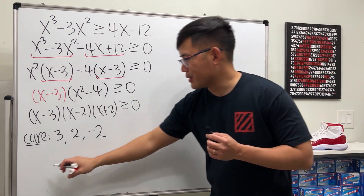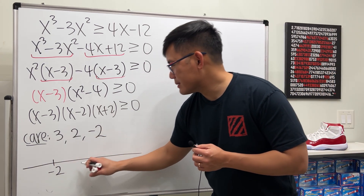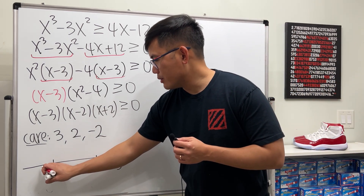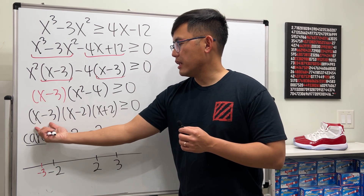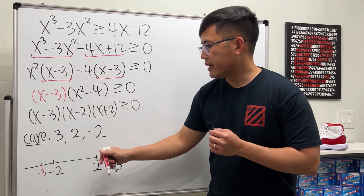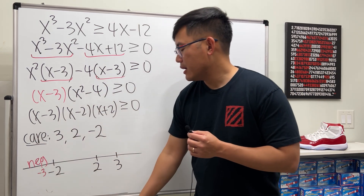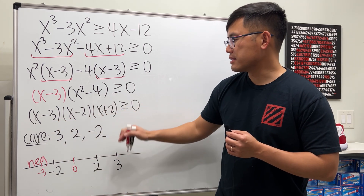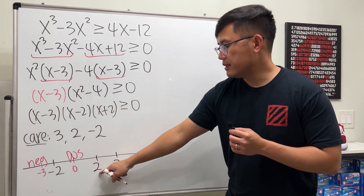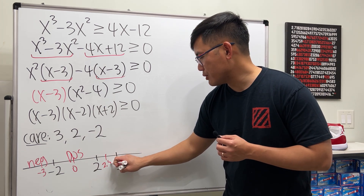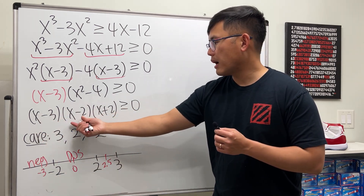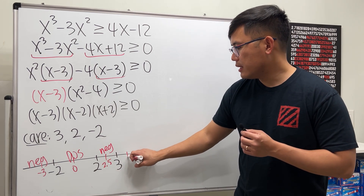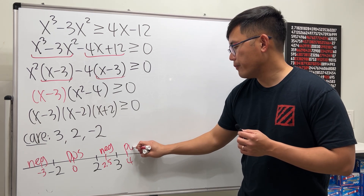Place negative two, two, and three on the number line. Pick a number less than negative two, say negative three — each factor is negative, so negative times negative times negative gives negative. Pick zero (between negative two and two): negative times negative times positive gives positive. Pick 2.1 (between two and three): negative times positive times positive gives negative.